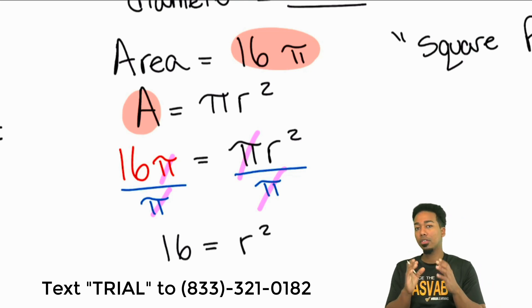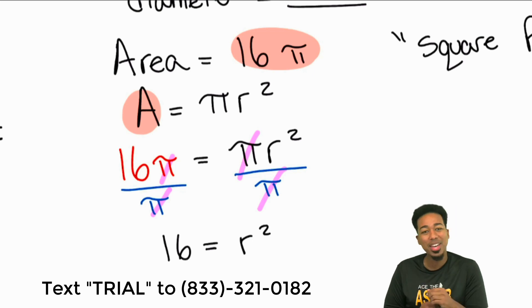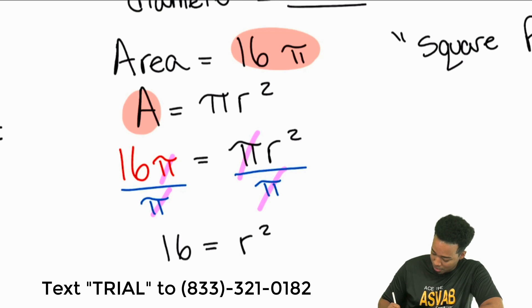So now we have 16 equals r². And now this is where you have to know how to solve an equation that has a square in it. Remember that solving equations is all about opposites. What's the opposite of squaring? Well, the opposite of squaring is going to be taking the square root. Booyah. So with that said, we'll take the square root. I'll go ahead and take the square root to both sides with purple here. Boom, square root, square root.